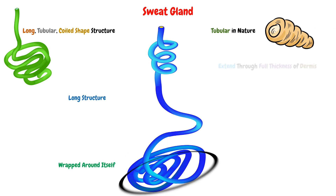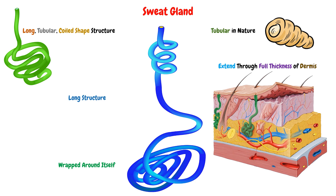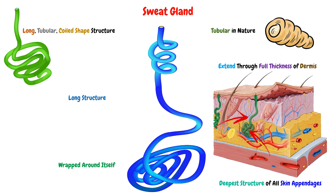These glands extend throughout the full thickness of the dermis layer, meaning they begin from the skin surface, extending down to the lower end of the dermis, and may reach the superficial fascia. From that, we can conclude that the sweat gland is the deepest structure of all the skin appendages.